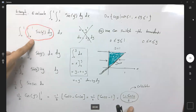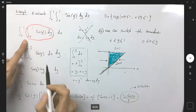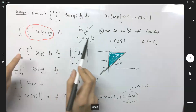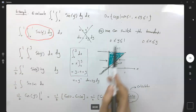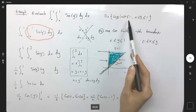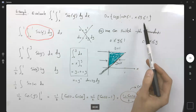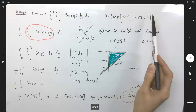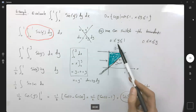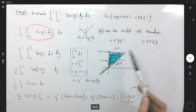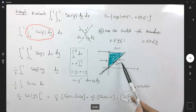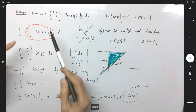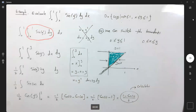We started by trying to find the integral with respect to y first, then x, but it didn't work. So we switched the boundaries: originally x was bounded between 0 and 1, and y between x and 1. We switched to y bounded between 0 and 1, and x bounded between 0 and y. This made the computation straightforward. Note that this integral is also computable via other methods such as integration by parts.